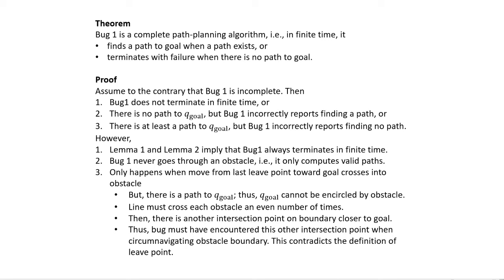If there is no path to Q_goal but Bug 1 finds one — is that even possible? By the definition of the algorithm, it never passes through an obstacle, so it only computes valid paths in free space. That rules out the second case. For the third case, Bug 1 would only report no path if, upon reaching a leave point, it immediately crosses into or hits the same obstacle again.